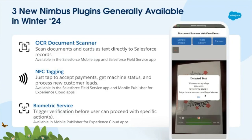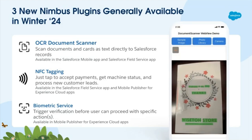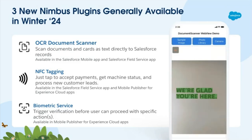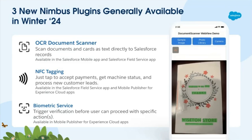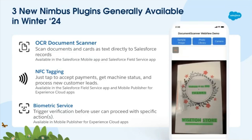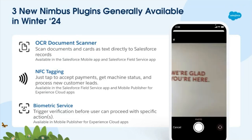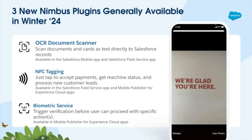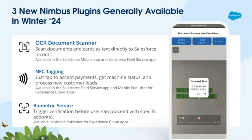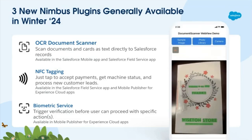The second new plugin is NFC Tagging. This allows the mobile device to read, erase, and write to NFC tags. An example use case: a field agent doing asset inventory checks can just tap NFC tags, making the whole process quicker and easier. And last but not least, Biometric Service. With this, your LWC can prompt users to confirm their identity at specific moments defined by you, the developer. For example, in a mobile banking app, you can define that biometric authentication is triggered when the user starts the process to transfer money.